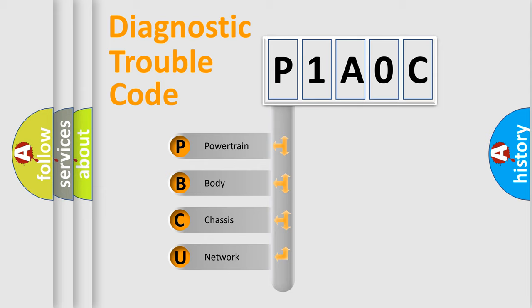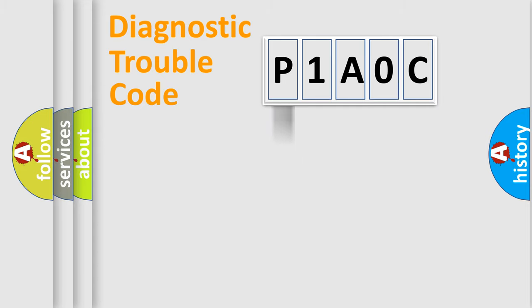We divide the electric system of automobile into four basic units: Powertrain, Body, Chassis, and Network. This distribution is defined in the first character code.